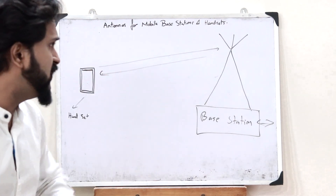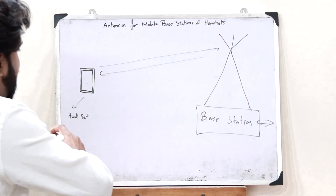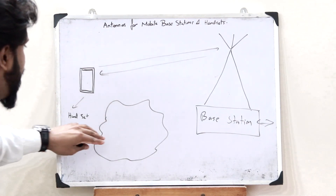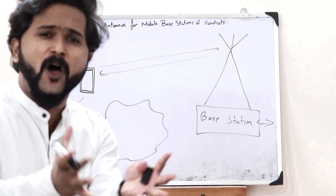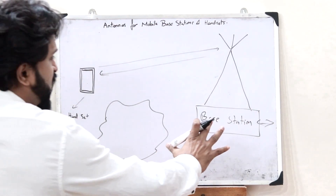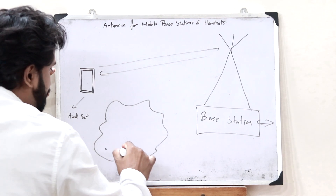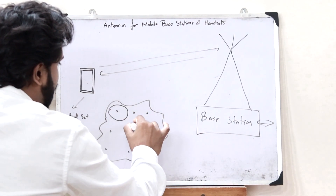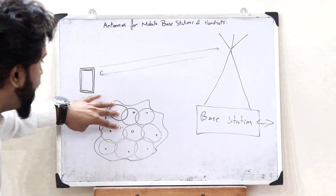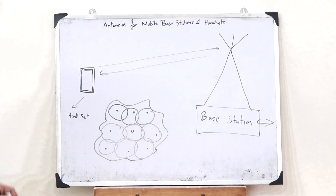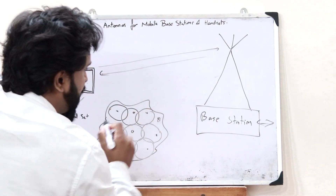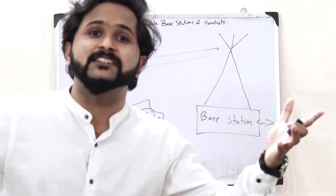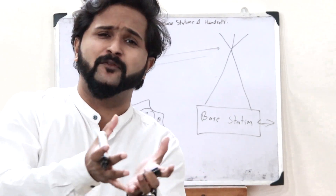This is the basic idea behind how a wireless communication system works — we have a handset and a base station. But in the real case, consider a particular area with a lot of handsets and mobile phones. What we do is place base stations at equal intervals, each with a coverage area. But if a person goes to an area with no coverage from either base station, that is when we say we are out of range.